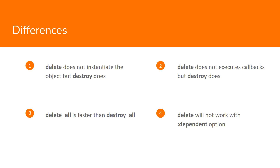The destroy method, on the other hand, instantiates the record first and then deletes it. So it executes callbacks and filters on the object to be deleted, and hence it is less efficient than the delete method. Both delete and destroy can delete single or multiple records at once.